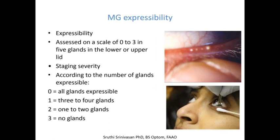The next aspect is meibomian gland expressibility, which can also be assessed on a 0 to 3 scale. You can assess essentially 5 glands, and according to the number of glands expressible, you can give the grade from 0 to 3 as described in the slide. Another method of expressing meibomian glands is using a Q-tip and a Mastrota paddle, or you can use just digital expression to see how the glands express.